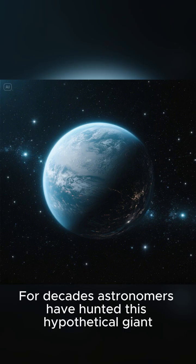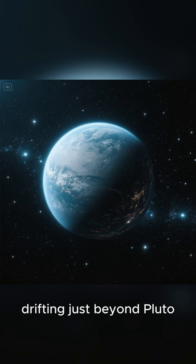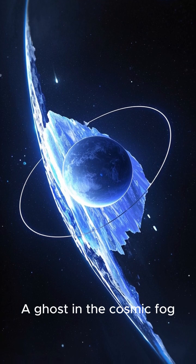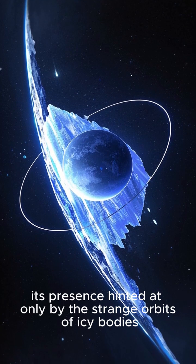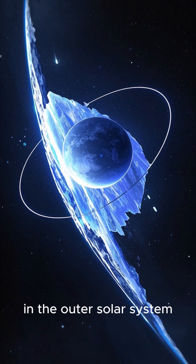For decades, astronomers have hunted this hypothetical giant planet X, a world seven times the mass of Earth, drifting just beyond Pluto. A ghost in the cosmic fog, its presence hinted at only by the strange orbits of icy bodies in the outer solar system.